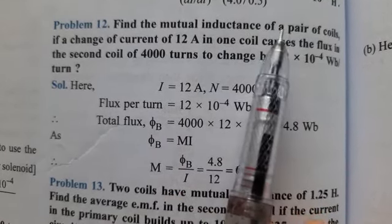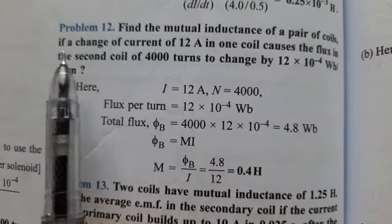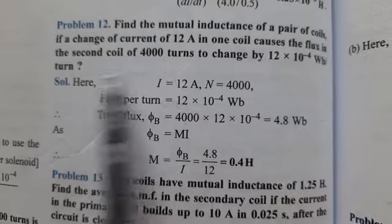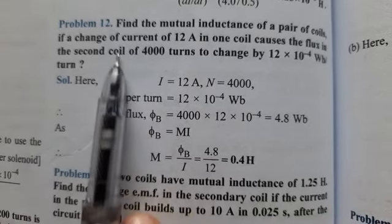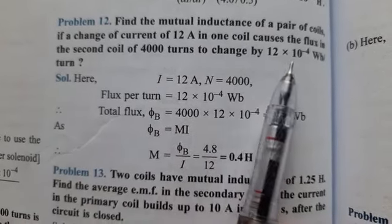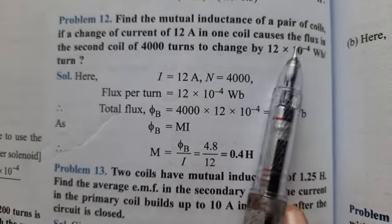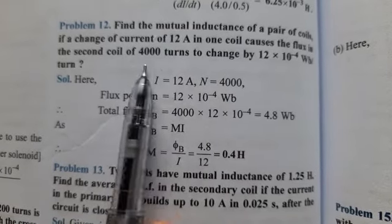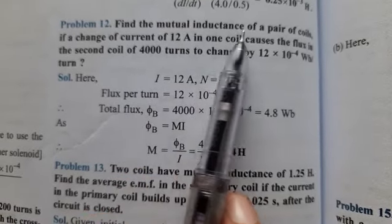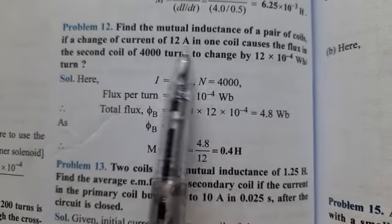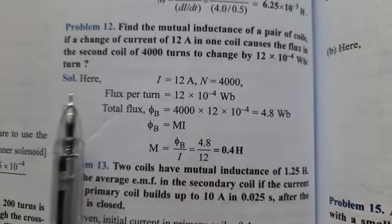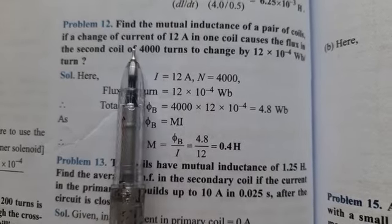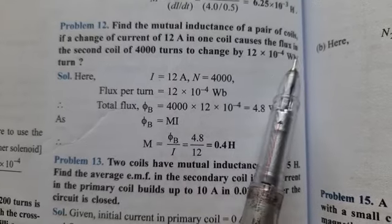Next problem: Find the mutual inductance of a pair of coils if a change of current of 12 ampere in one coil causes the flux in the second coil of 4000 turns to change by 12 into 10 raised to minus 4 weber per turn.